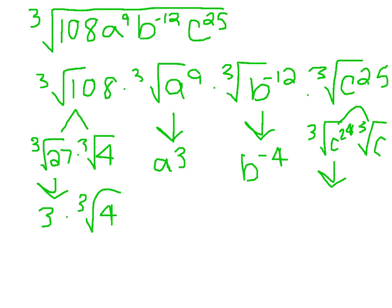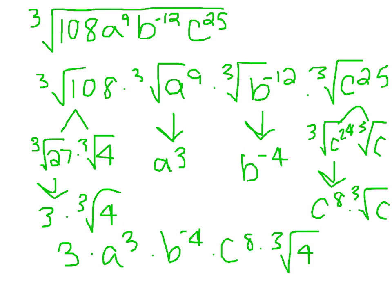This simplifies to c to the 8th times cube root of c. So then we have 3 times a to the 3rd times b to the negative 4th times c to the 8th times cube root of 4 times cube root of c.